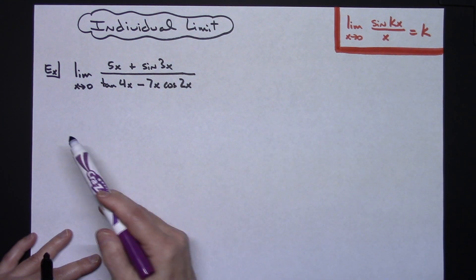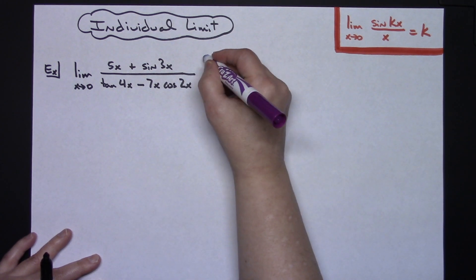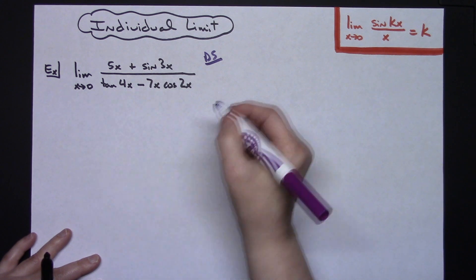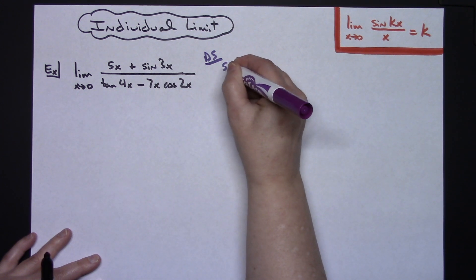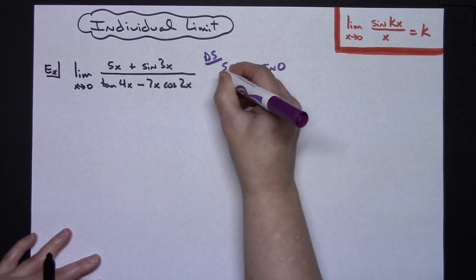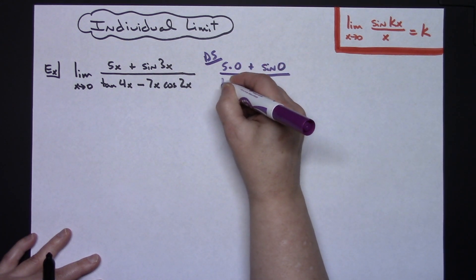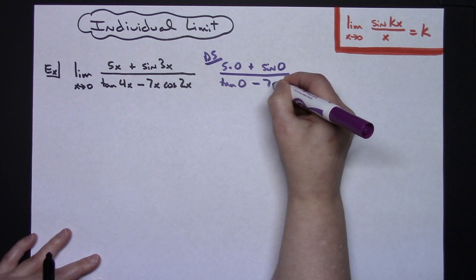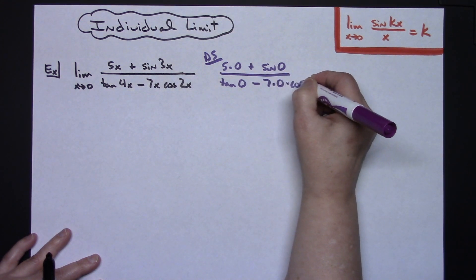So in this limit we're going to first do a direct substitution. Make sure that it really is an indeterminate form so I'm going to plug 0 in. I'm going to have 5 times 0 plus the sine of 0 and then on the bottom we'll have the tangent of 0 minus 7 times 0 times the cosine of 0.